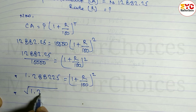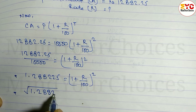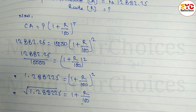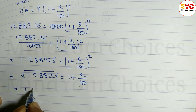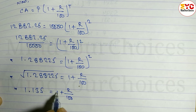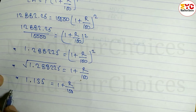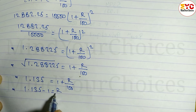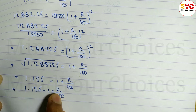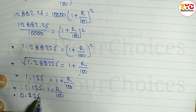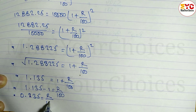Taking the square root of both sides: root of 1.288225 is equal to 1 plus r divided by 100. Calculating the root gives 1.135 is equal to 1 plus r divided by 100. Moving 1 to the left side: 1.135 minus 1 is equal to r divided by 100, so 0.135 is equal to r divided by 100.